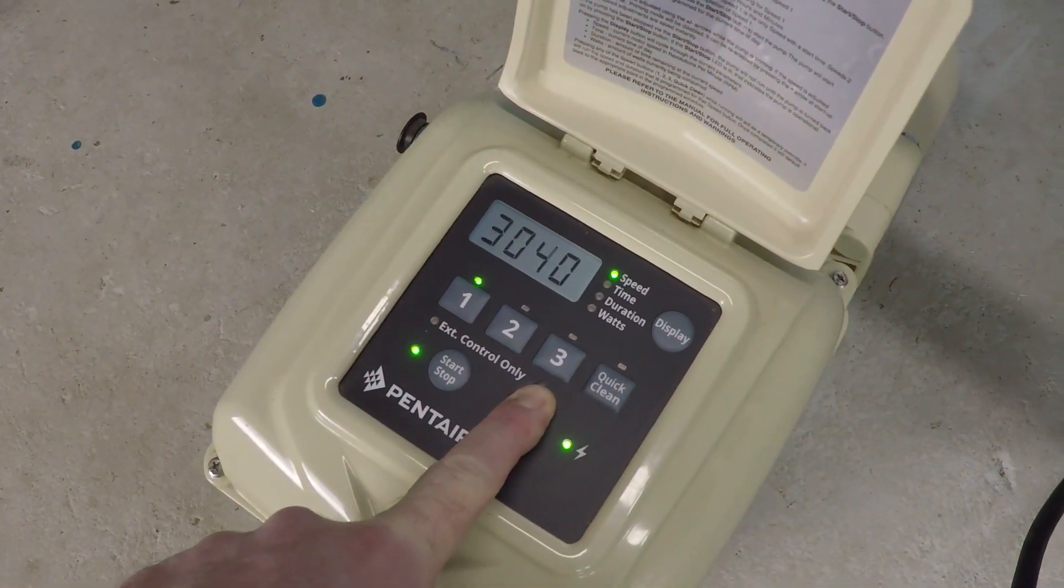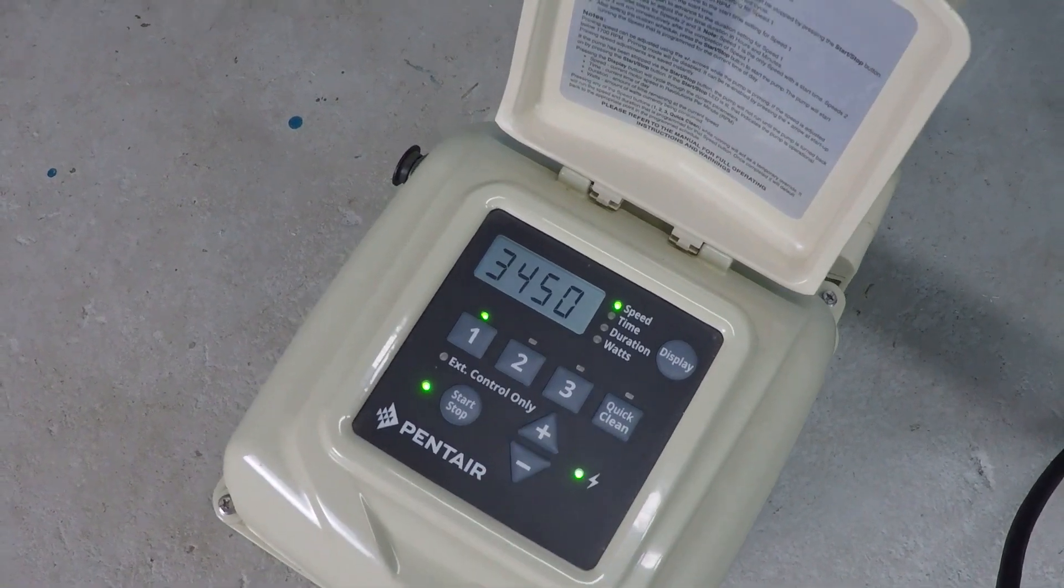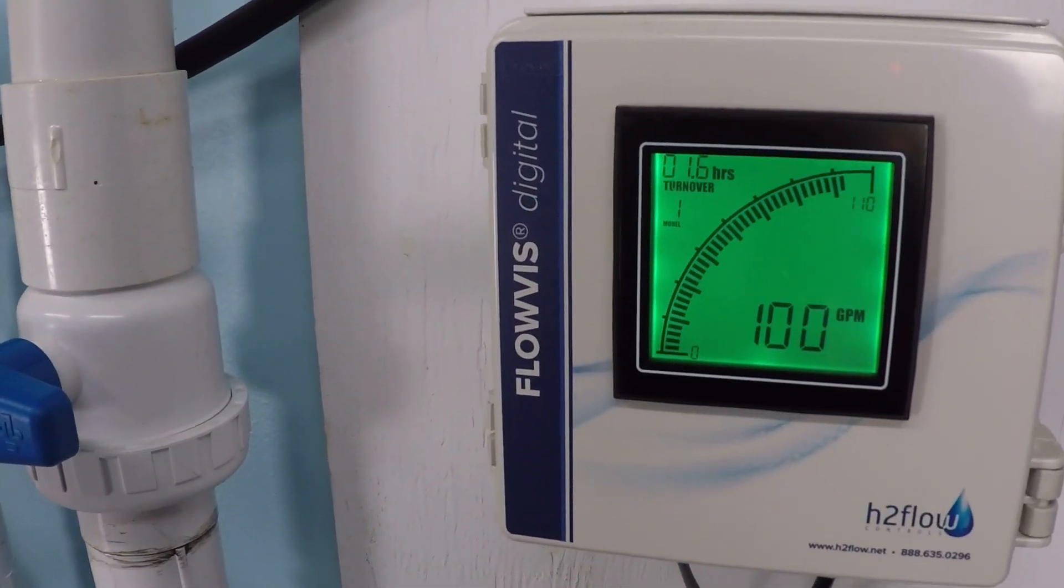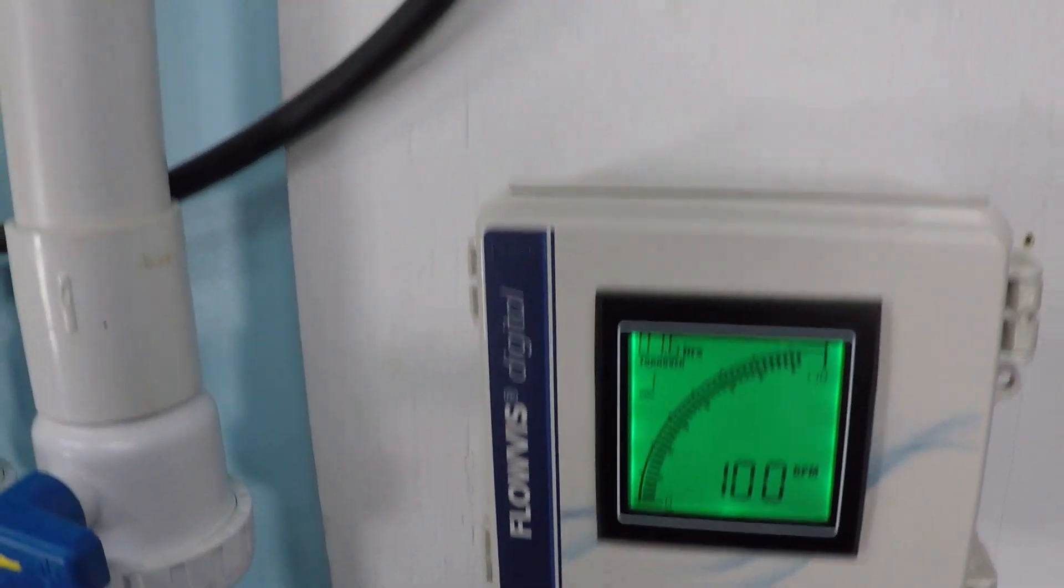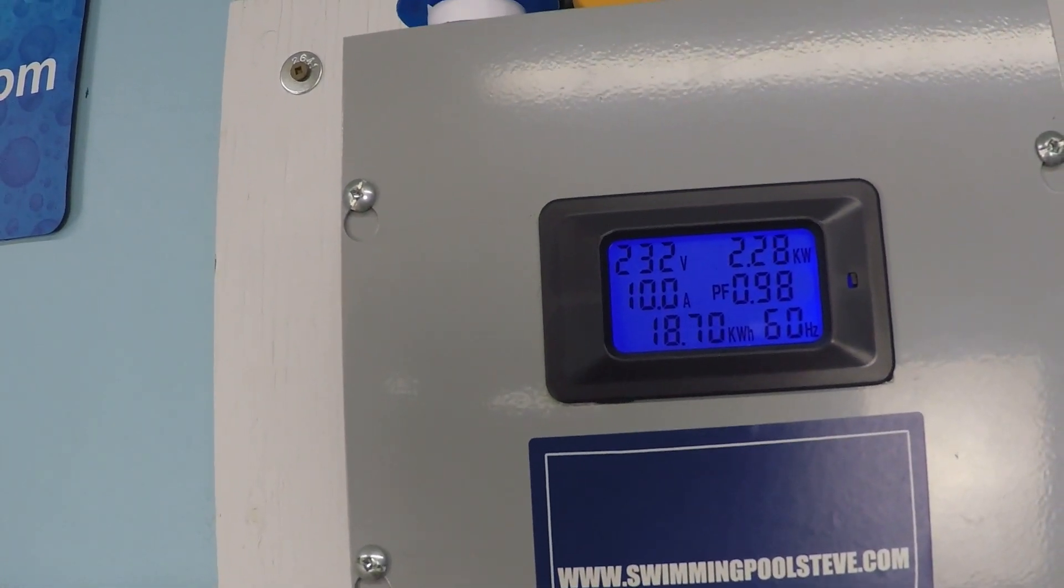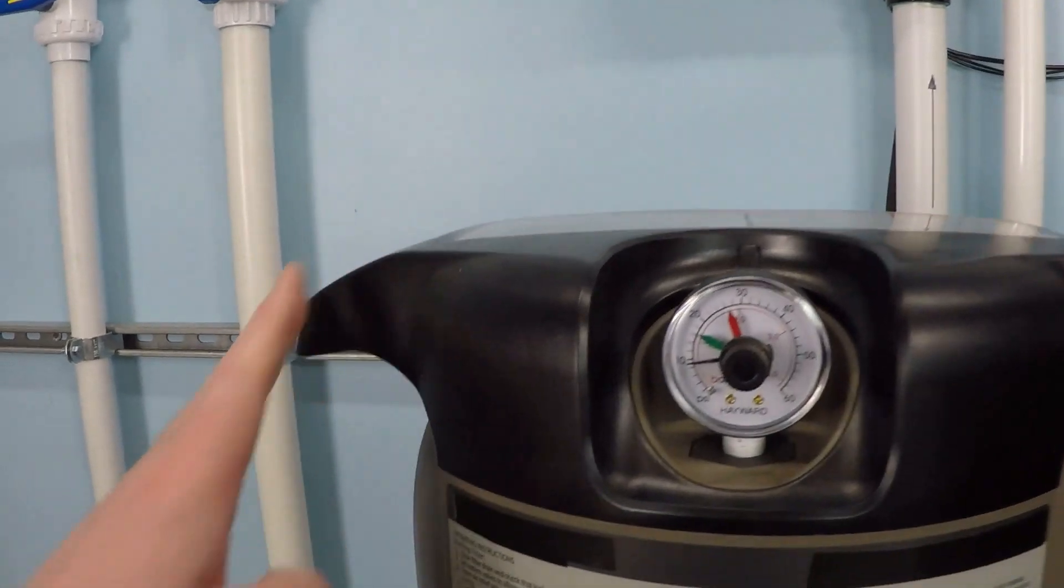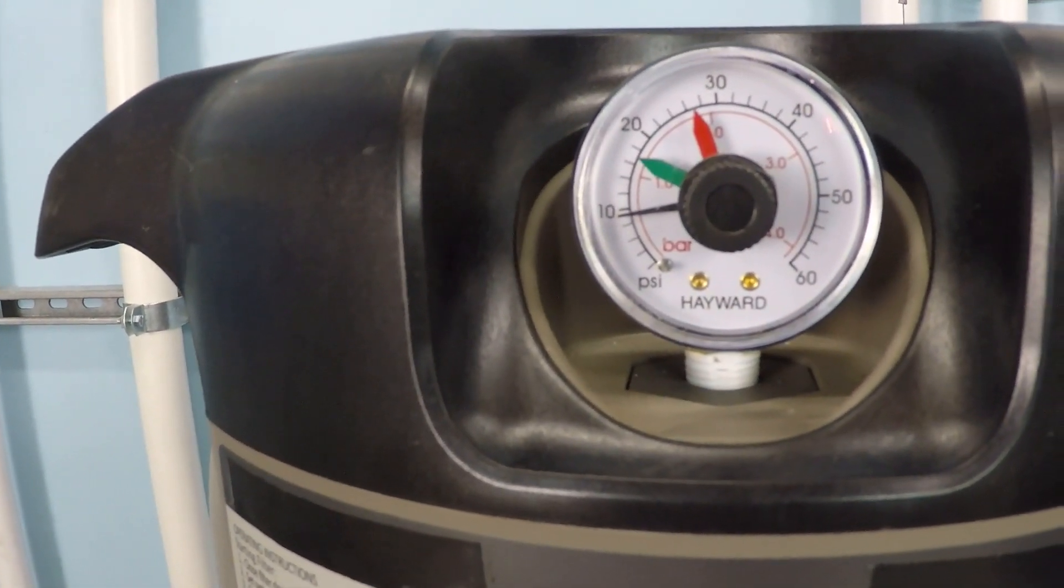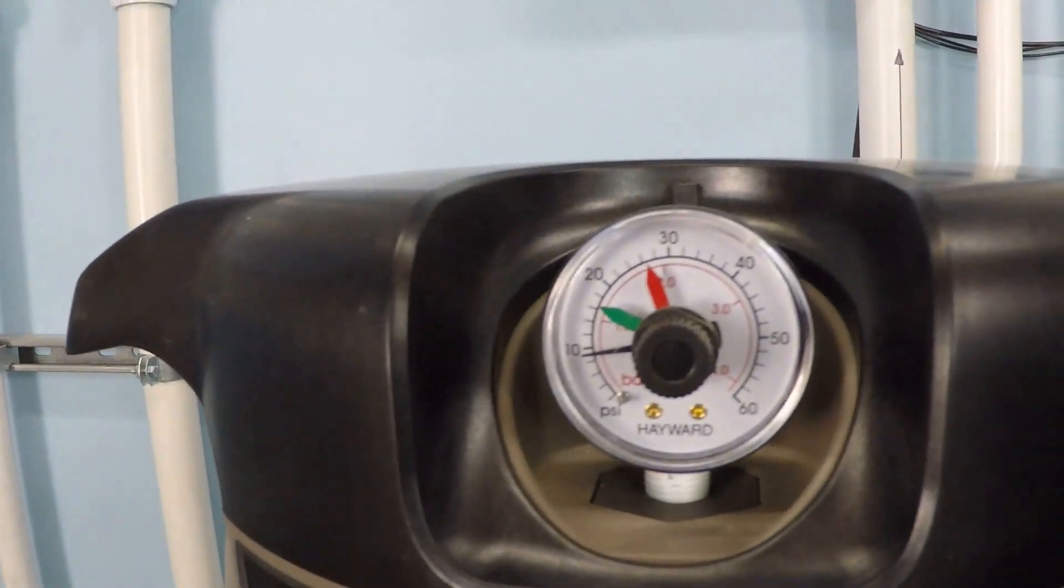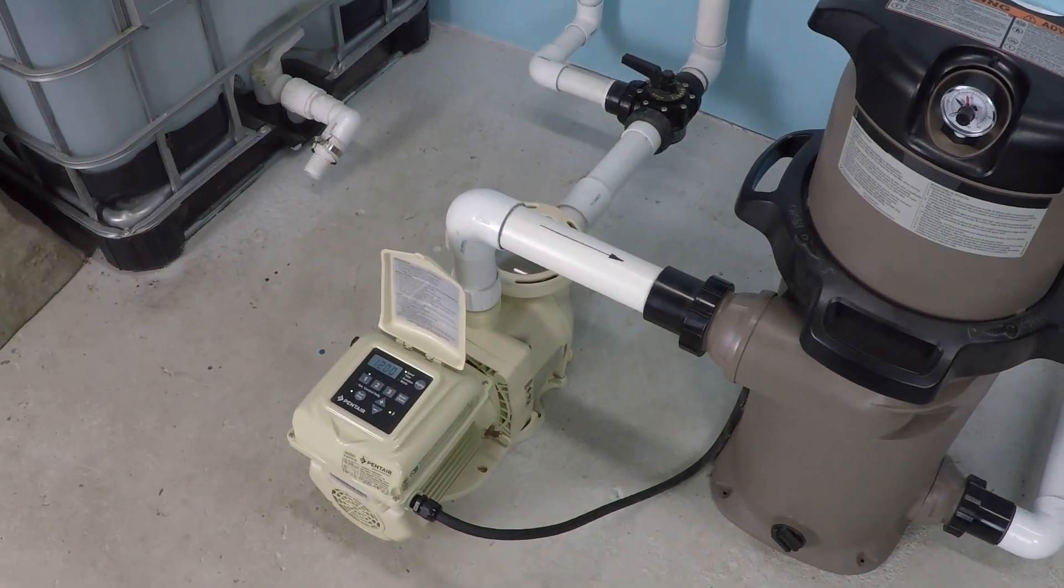And this will be top speed now. At about 100 gallons per minute, 2.28 kilowatts of power consumption. Now let's take a look at the filter to see our filter pressure. It's about 9.5 psi, and that'll be a good point of comparison here for when I hook up the second pump.